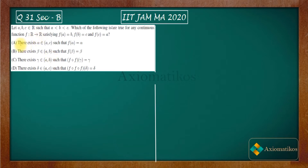Let us look at option A: there exists alpha belonging to the open interval (A, C) such that F(alpha) = alpha. That means the question is talking about a fixed point. Option B is similarly talking about a fixed point, and we will discuss C and D later.